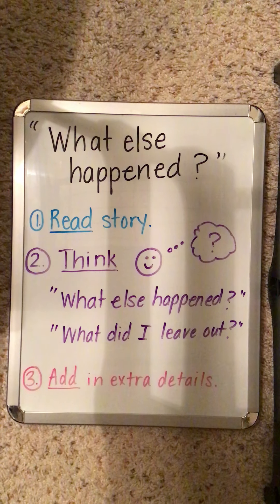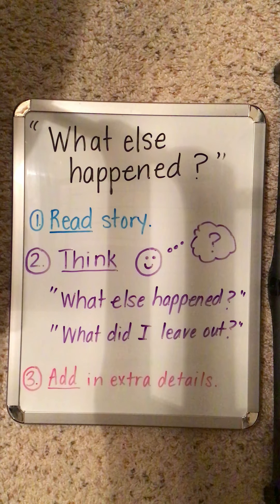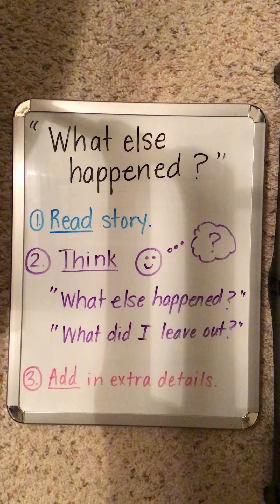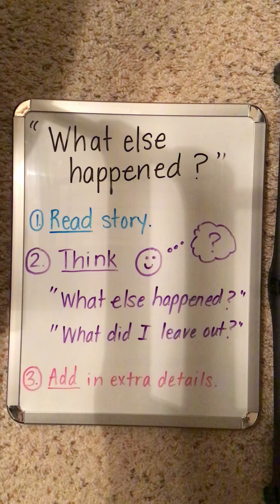The strategy for today is called 'What Else Happened?' Here's how the strategy works. You are going to write a story. Today's prompt is about writing about a special time that you spent with a best friend. You're going to write that story, then go back and reread what you wrote, and then think: what else happened? What did I leave out?